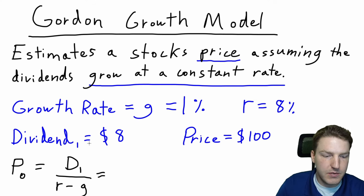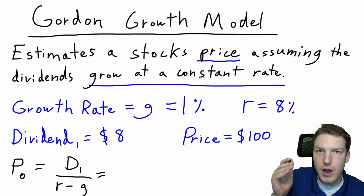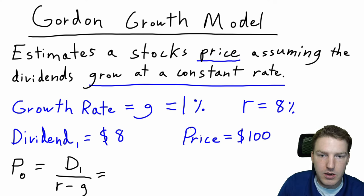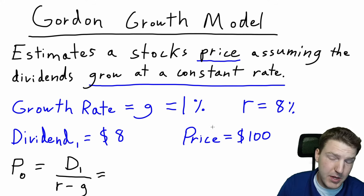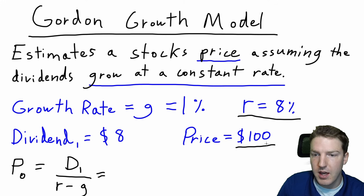So if we took that dividend at time one that we call D1, $8, and we just assumed that it grew every year at a constant rate, and for this example we'll use 1%, what would be the intrinsic value or estimated price of the stock? Let's assume that this stock, we still have a required rate of return of 8% and the market is pricing it at $100.